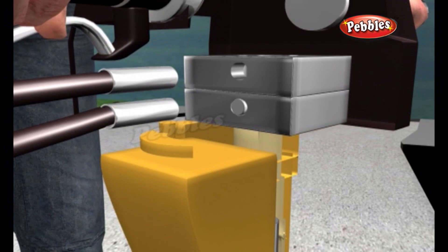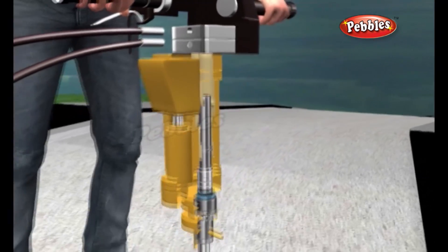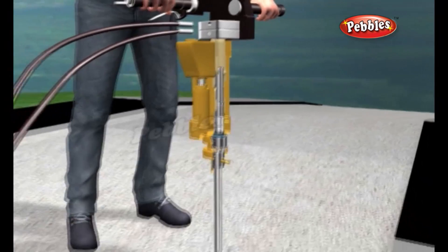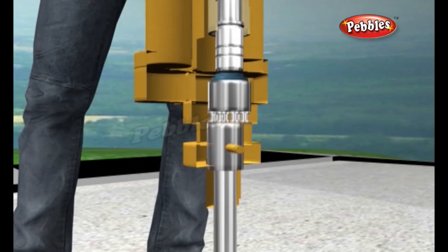First, the high-pressure air flows one way round the circuit, forcing the pile driver down so it pounds into the drill bit, smashing it into the ground.